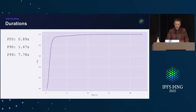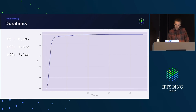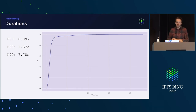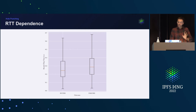How long does a hole punch take? The median is roughly 0.9 seconds, the 90th percentile is 1.7 seconds, and the 99th percentile is around 8 seconds. This accounts for the connection establishment time and could become important if performance is a problem at some point.